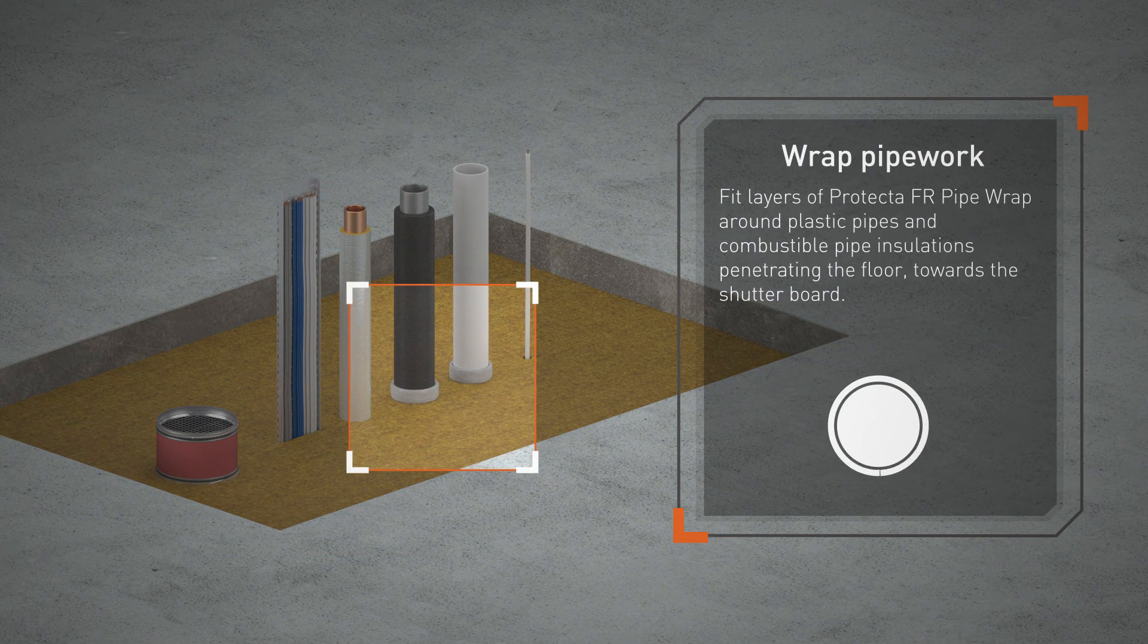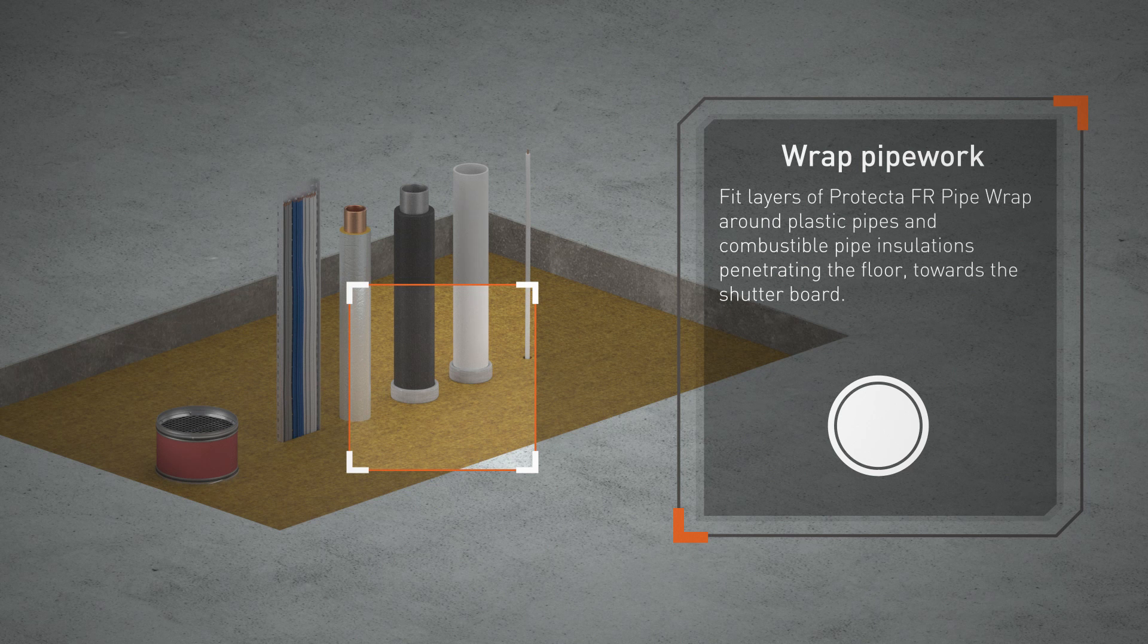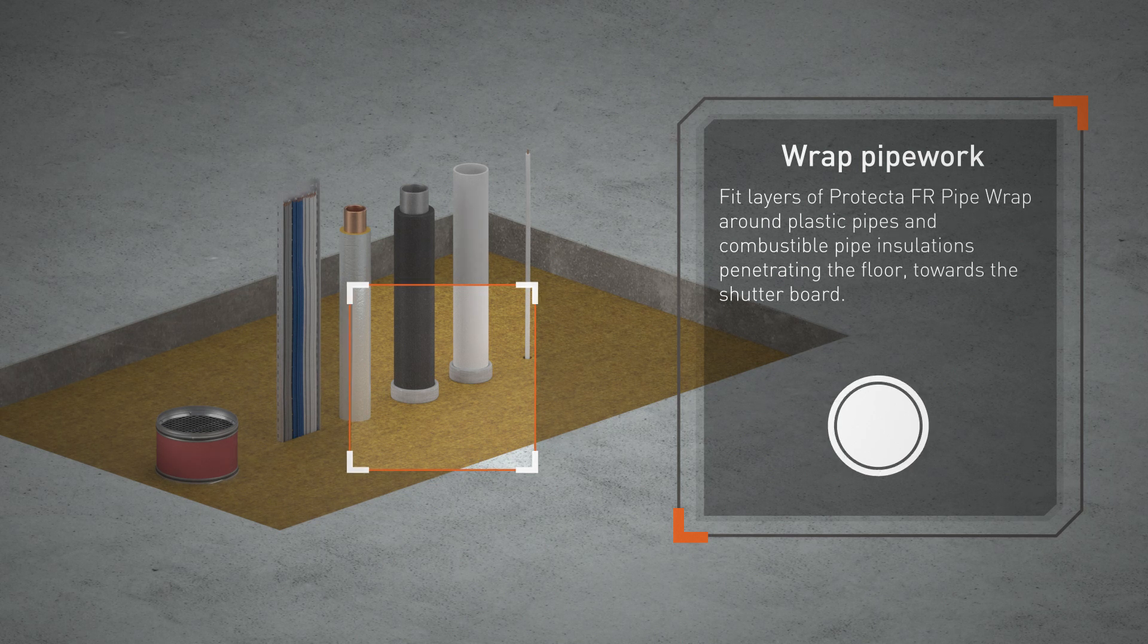Fit layers of Protecta FR Pipe Wrap around plastic pipes and combustible pipe insulations penetrating the floor towards the shutter board.